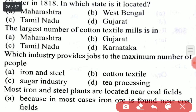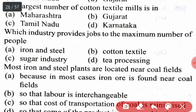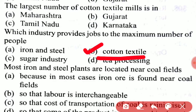The largest number of cotton textile mills is in which state? Next, which industry provides jobs to the maximum number of people — a very common and important question. The answer is option B, the cotton textile industry provides jobs to the maximum number of people.